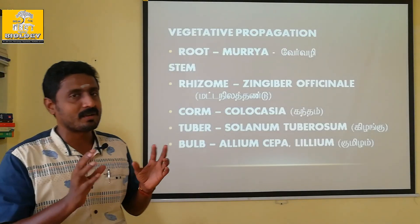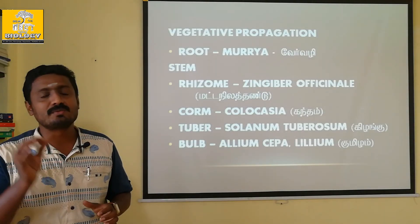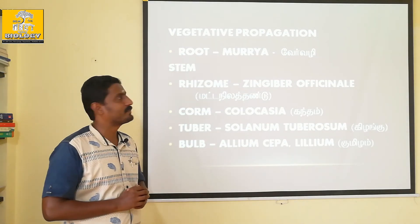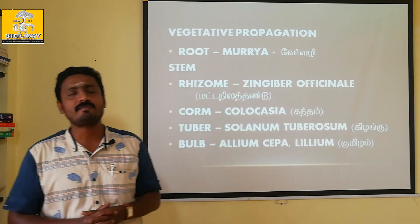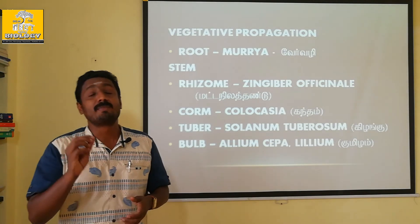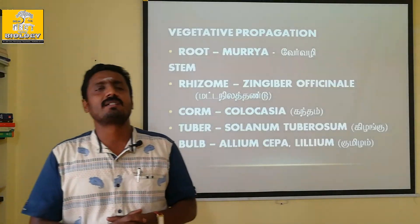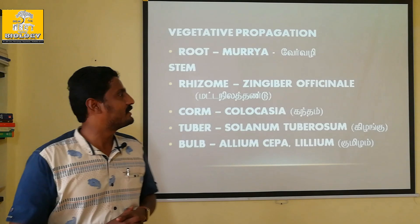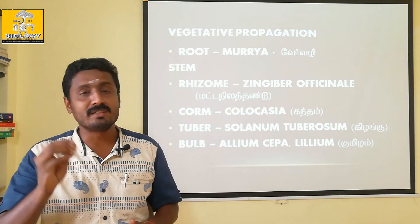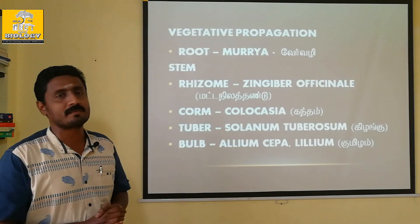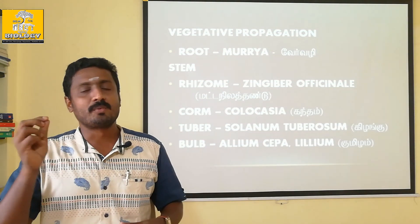If you look at the nodes and internodes, you also look at the notes. That is the name — Kanu and Kanu. Corm is the name in Tamil. This is a type of vegetative propagation.